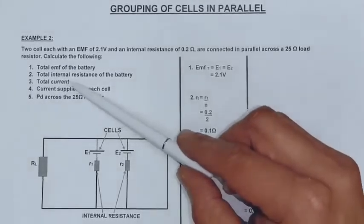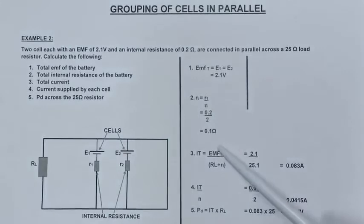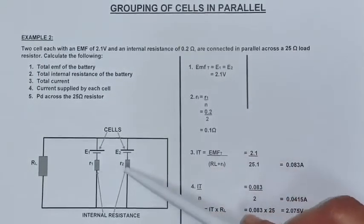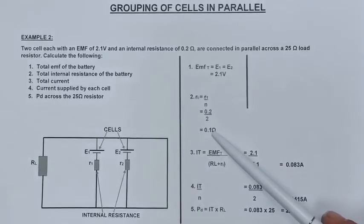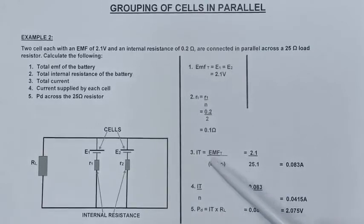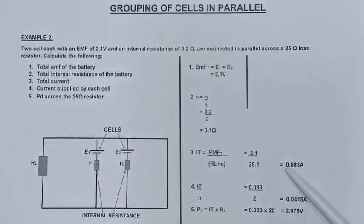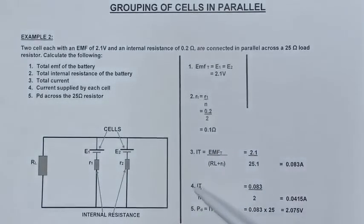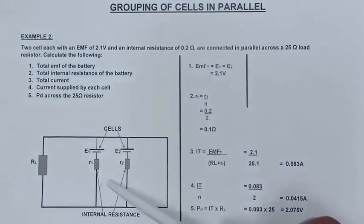Next I am going to calculate my total current flowing in the circuit. That is my EMF total divided by my total resistance in the circuit, which is my load resistor plus my internal resistances of 0.1 ohms when connected in parallel, giving me 25.1 ohm total resistance. My total current is 2.1 divided by 25.1 ohms, which is 0.083 amps. Next I calculate the current supplied by each cell: total current divided by N, which is 2, giving 0.0415 amps.